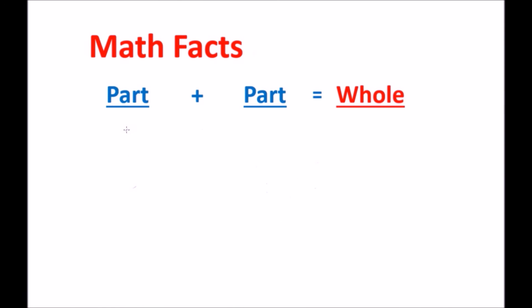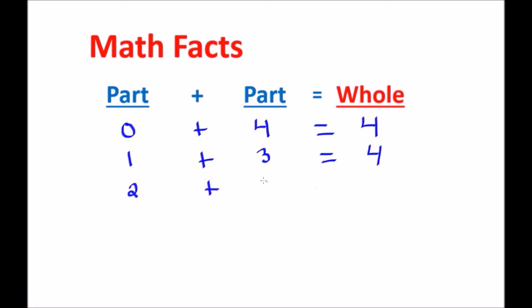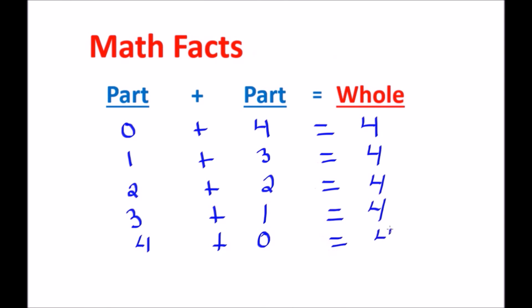So now what does this mean in terms of addition facts for the number four? We know that zero plus four gives us the whole of four. The next addition fact: one plus three equals four. We also know that two plus two equals four. And three plus one equals four — because of the commutative property we can change one plus three to three plus one. And four plus zero equals four — again the commutative property. Two plus two is a special number called a double, because you're adding the number to itself, like we did when we did the ones. So two plus two equals four.